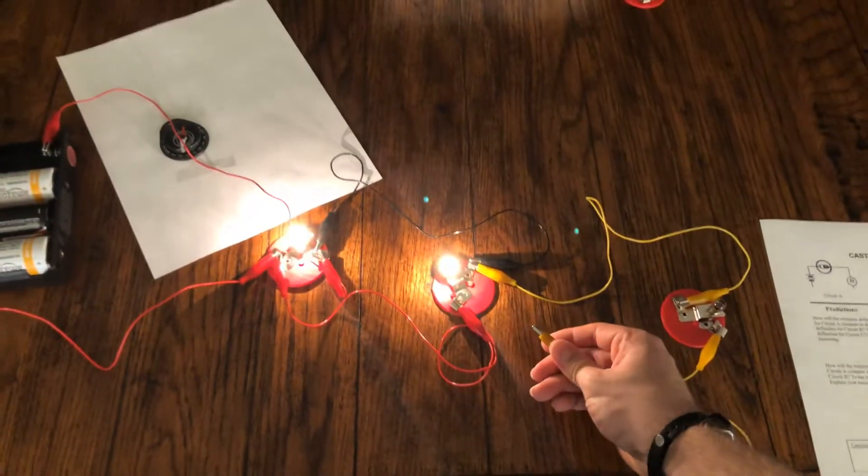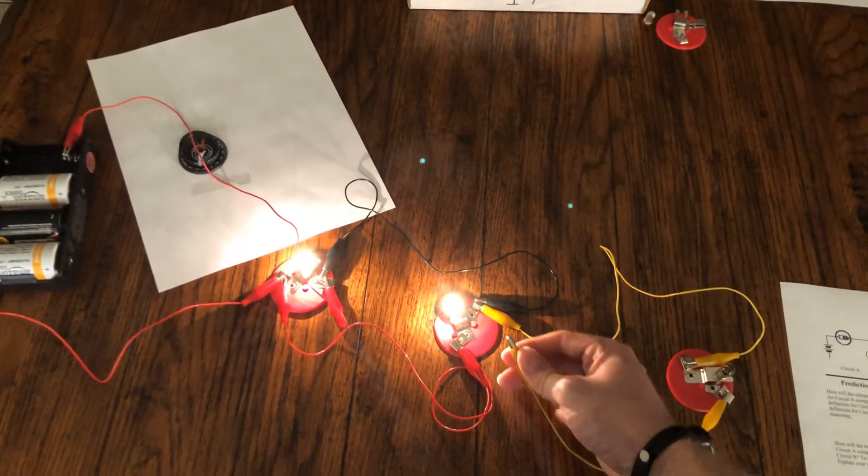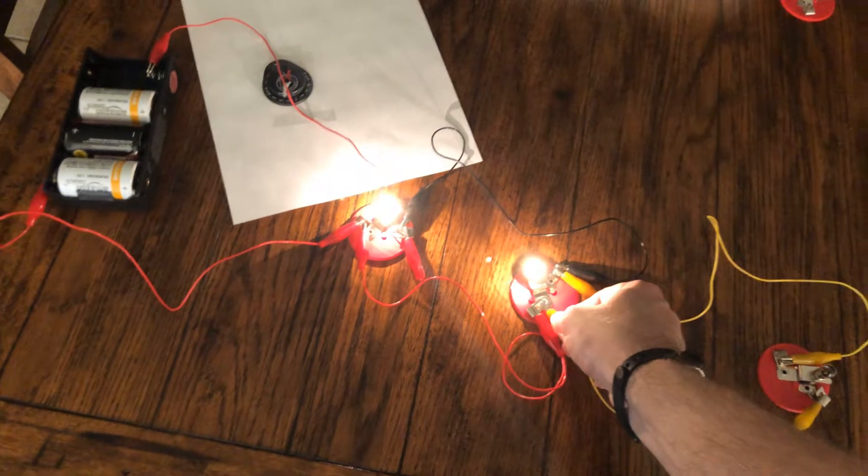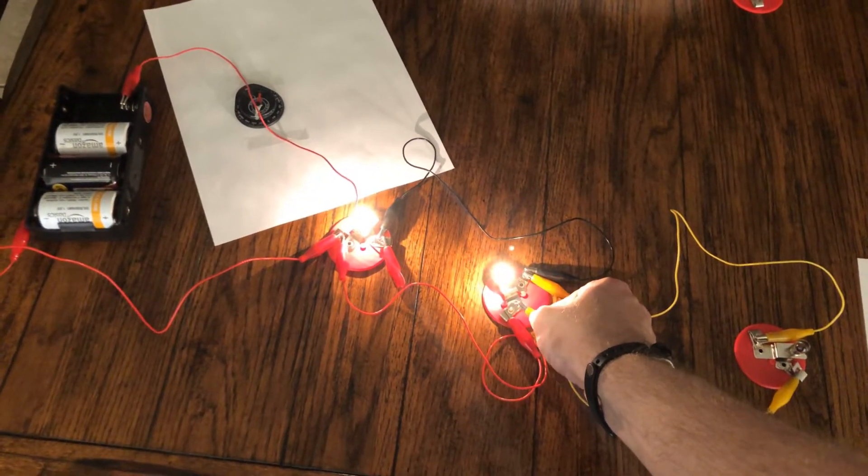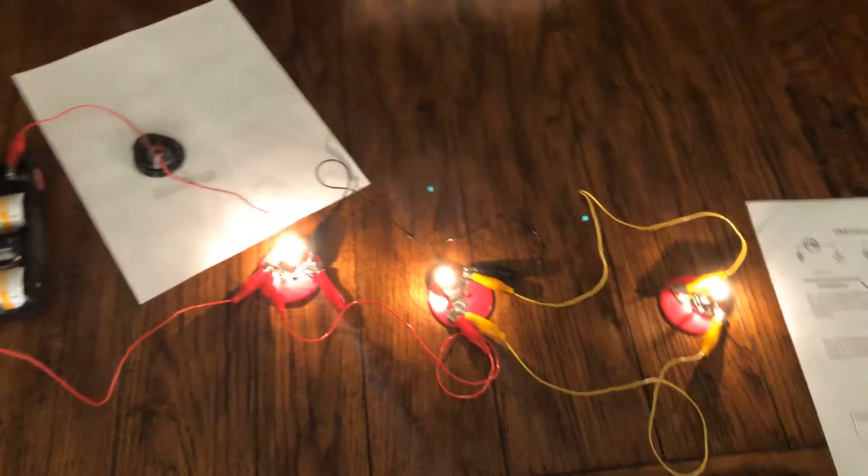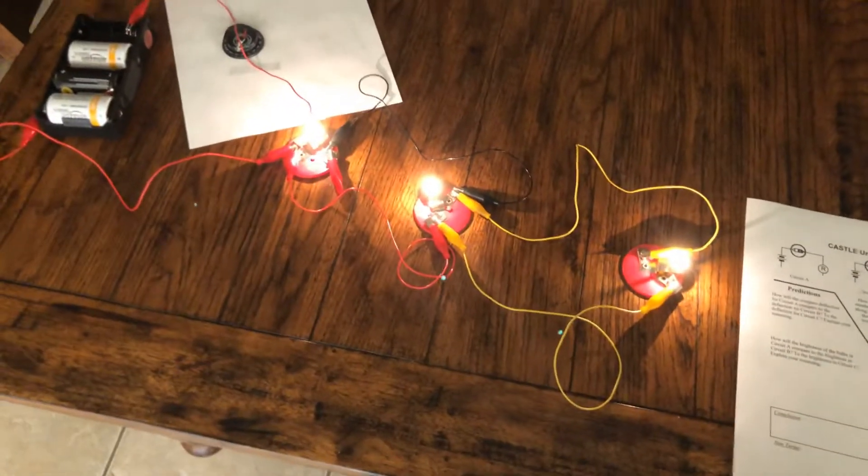Okay, I can add this third bulb then, which this would be circuit C, and we'll see what we observe there. Again, we do see that brightness decrease very slightly, but they're still pretty much as bright as they should be.